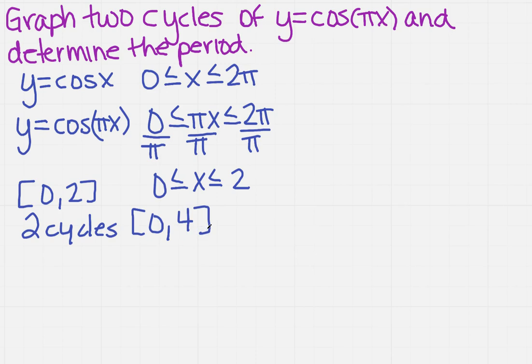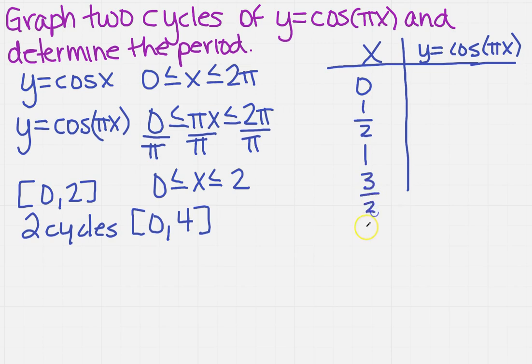So how am I going to do that? This time you're going to use whole numbers for x values. I'm going to come up on the right hand side because I know I'll run out of room on the other side. I have x and I have my y, which is the cosine of pi x. And I'm going to use 0, 1 half, 1, 3 halves, 2.